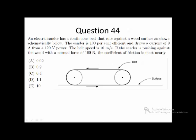Question 44. An electric sander has a continuous belt that rubs against a wood surface as shown schematically below.